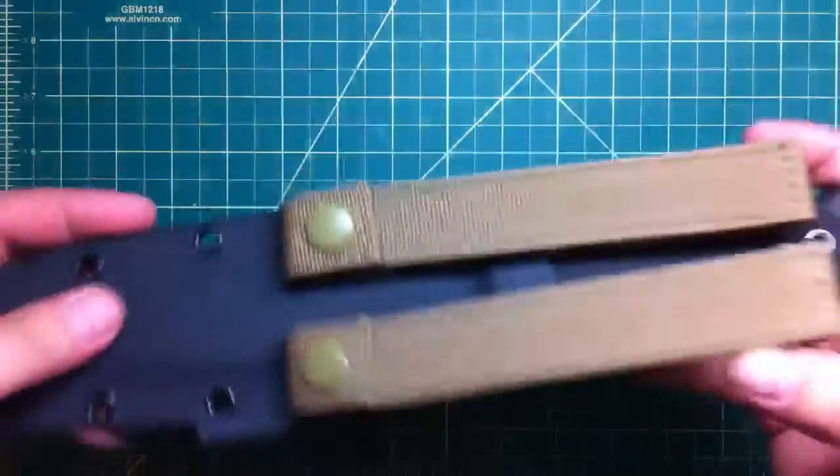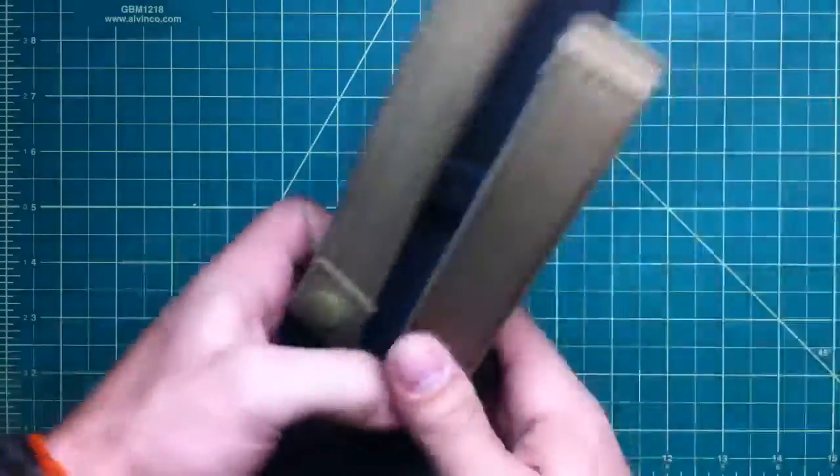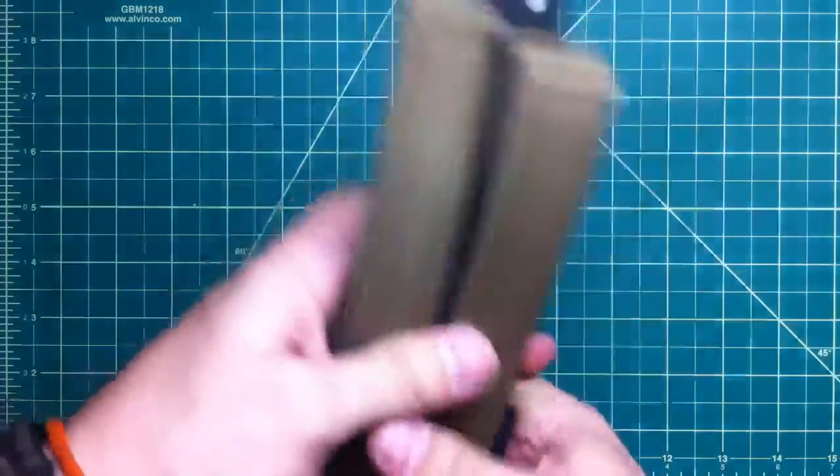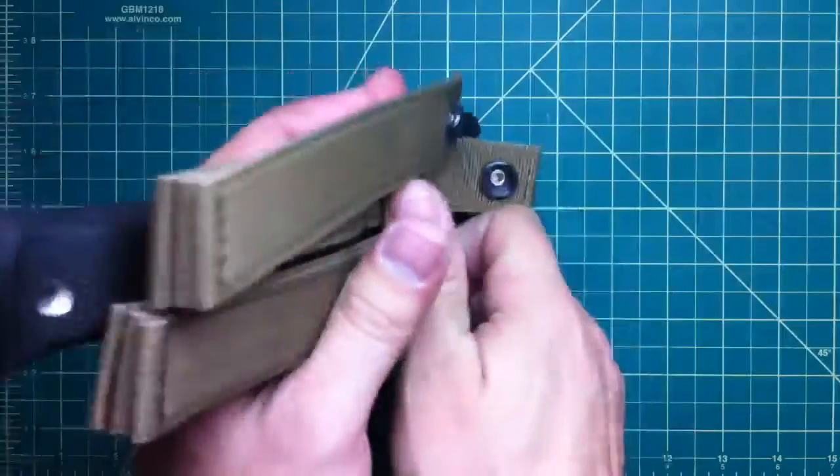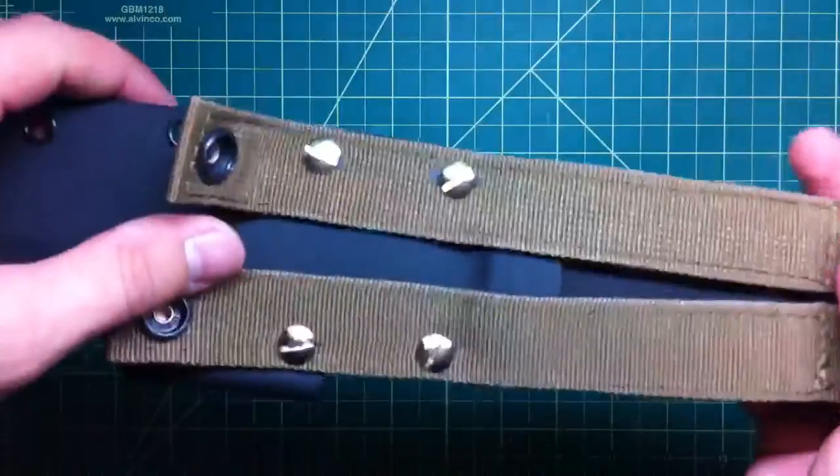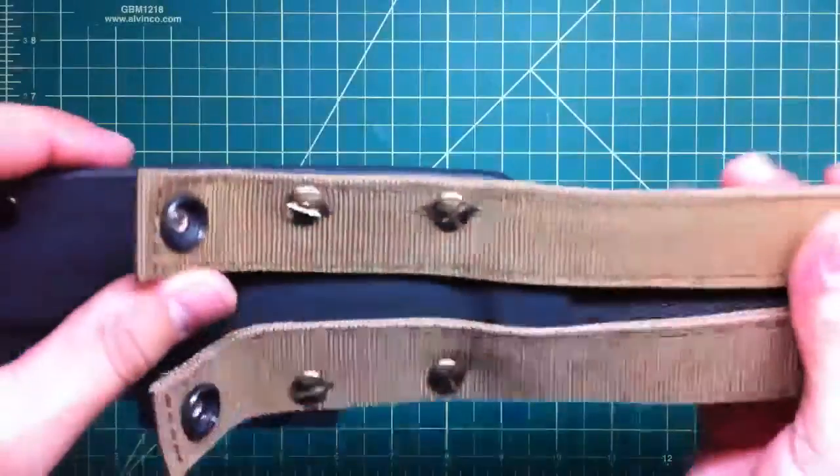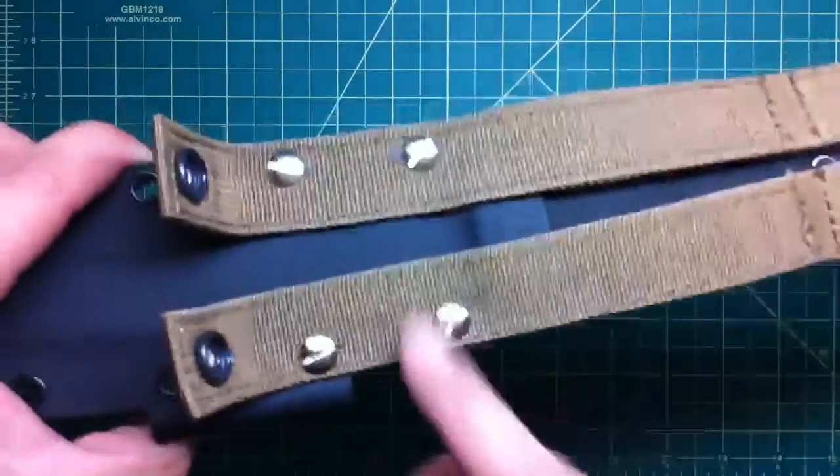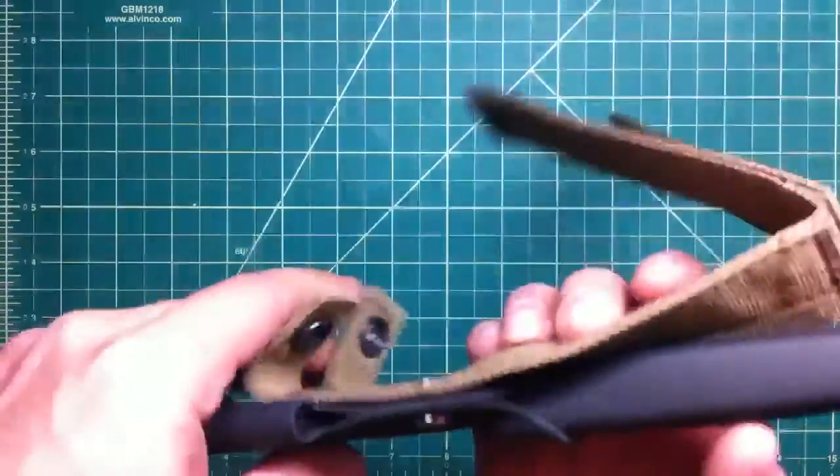All you have to do is melt that hole, just like I showed in the other videos when I was doing the nylon backing or nylon straps for the sheets. Mark them, melt the new holes through for the Chicago screws, and there you go.